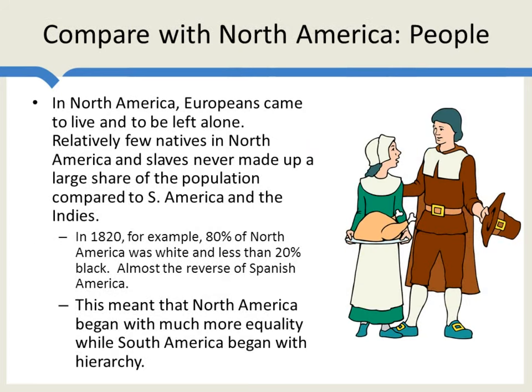Here's another factor endowment: people — or rather the lack of them. Compared to Central and South America, there were actually relatively few natives in North America. And slaves, although incredibly important for the United States, never made up a large share of the population compared to South America and the Indies. In 1820, 80% of North America was white, less than 20% black — almost the reverse of Spanish America. So this meant that North America, despite inequalities particularly with the slaves, began with much more equality, while South America began with hierarchy.